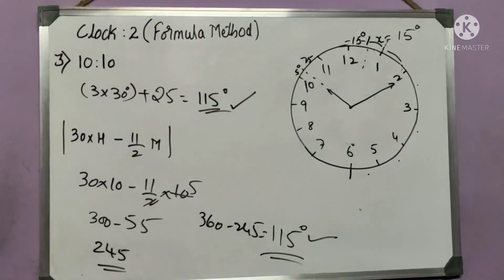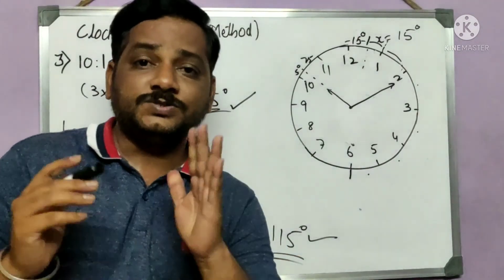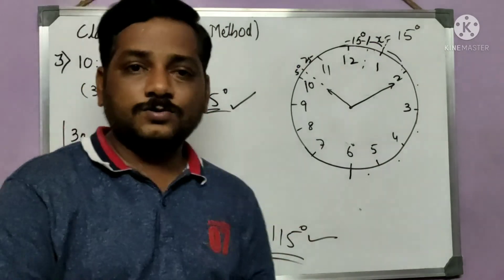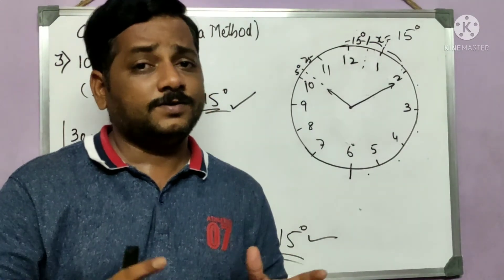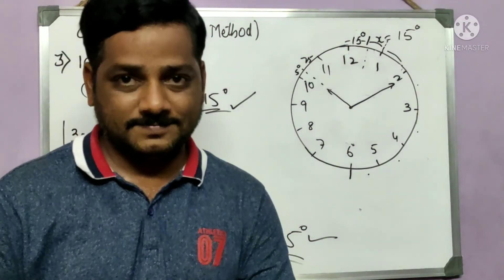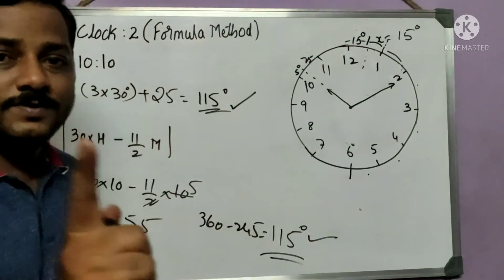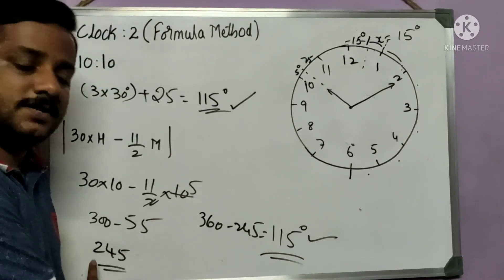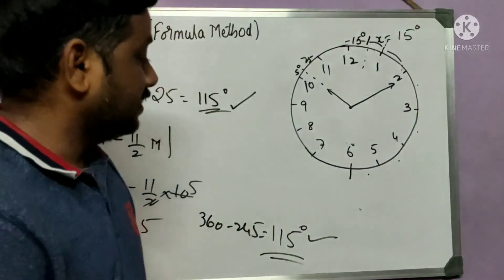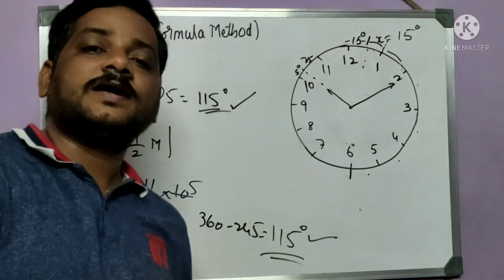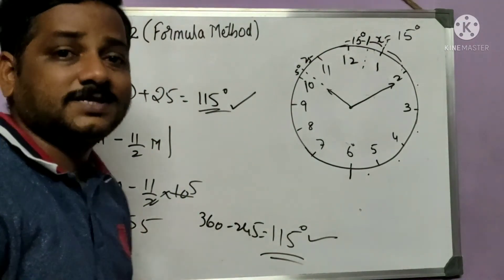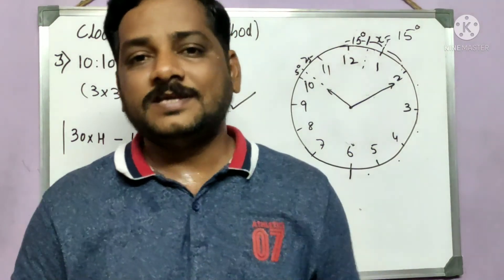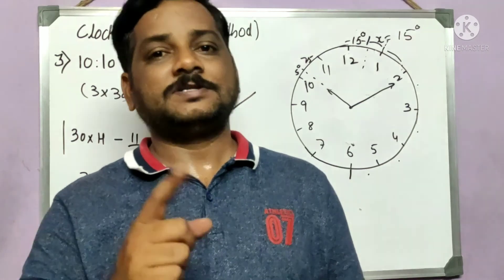Tricky questions can cause confusion, but now you can conclude: you can use either the traditional method or the formula method and get the same answer. The one hint for the formula method — if the answer is more than 180, apply 360 minus that answer to get the actual angle. If it is less than 180, keep it as is. Also note: more than 180 is a reflex angle. If the concepts are clear, please like, share with friends, and subscribe to my channel. Thank you.